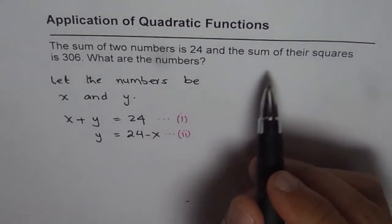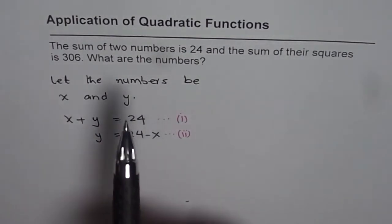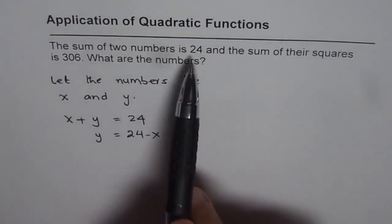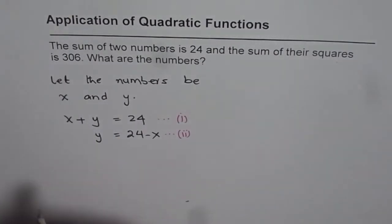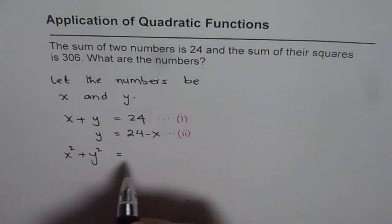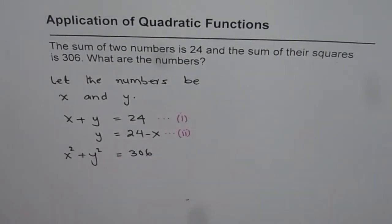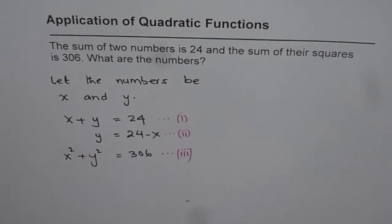Now let us read the question once again. It says sum of two numbers is 24 and sum of their squares is 306. That means x squared plus y squared equals 306. So that is another equation to solve. We have now given equations, with these equations we can always solve for two variables.